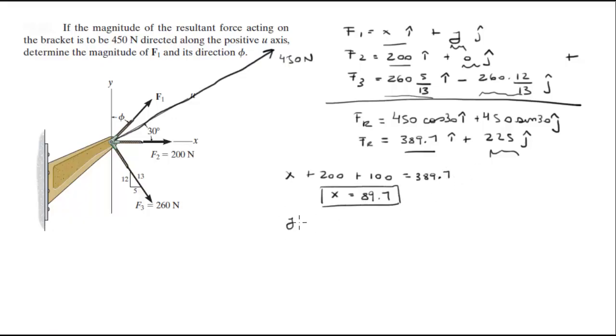And the y plus 0 minus 240 because 260 times 12 over 13 is 240. There's a minus over here. This is equal to 225, which means that y is equal to 465.